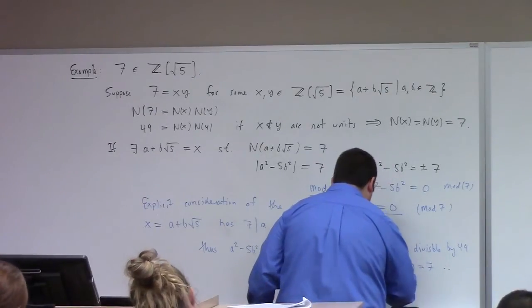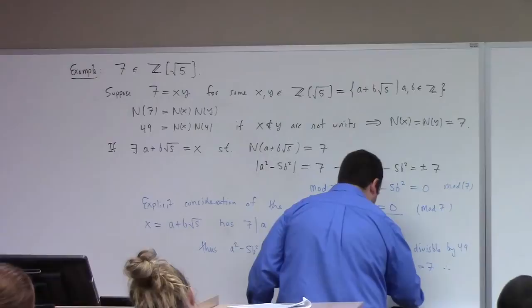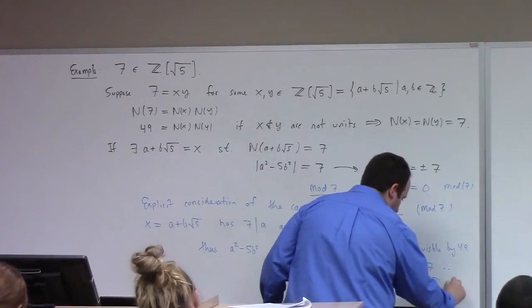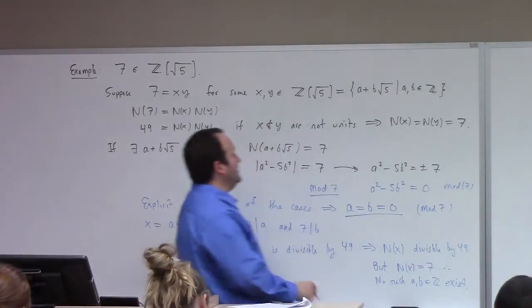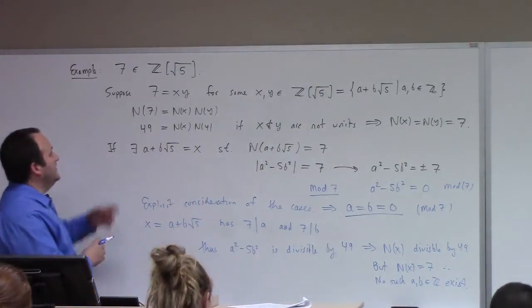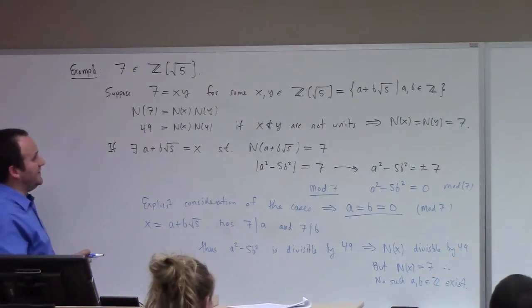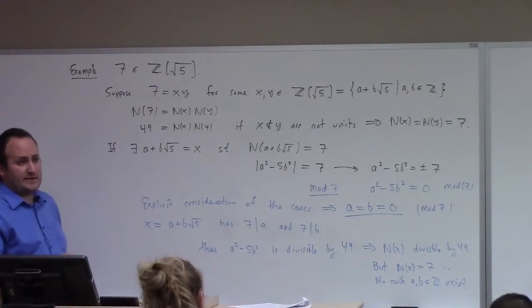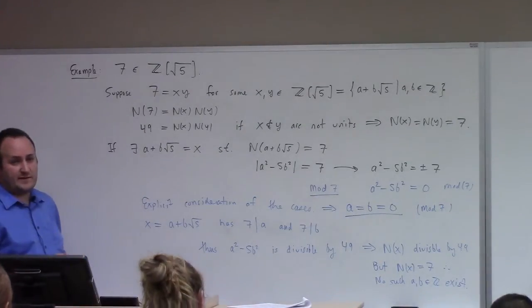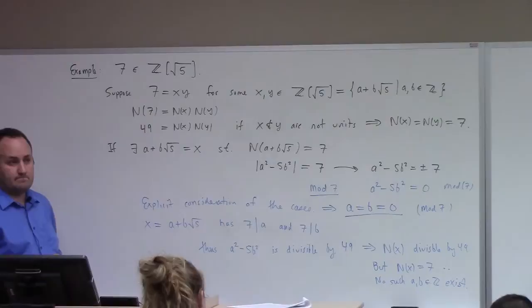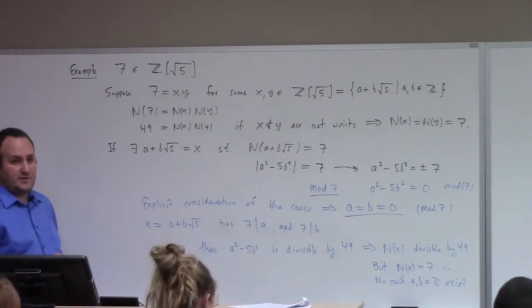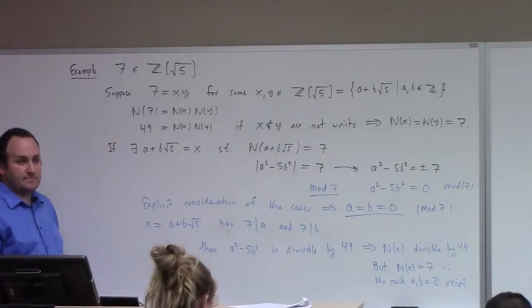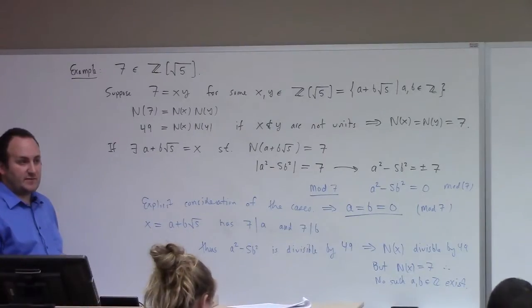Therefore, no such a, b in Z exist with norm equal to 7. We conclude that if you have the number 7 in Z[√5] and you factor it into x times y, at least one of those factors must be a unit. That is to say, 7 is irreducible in this ring.